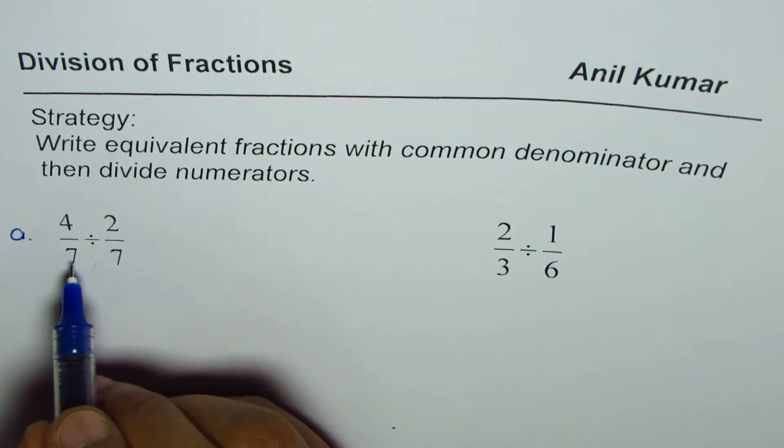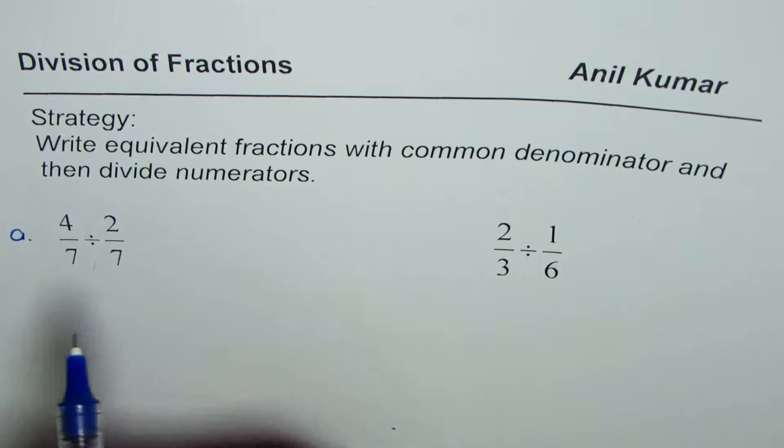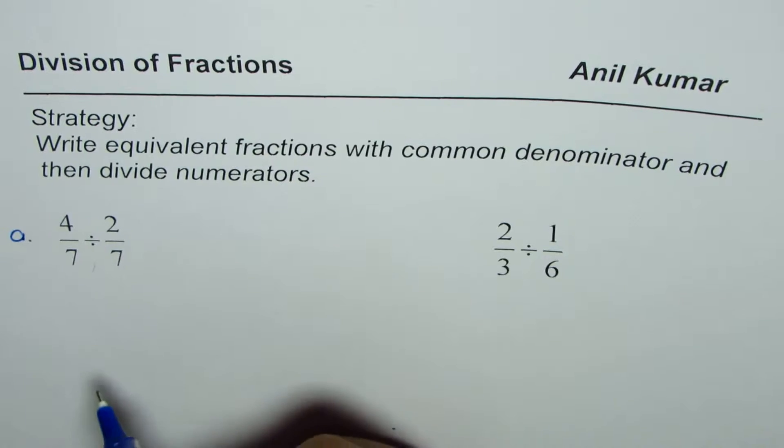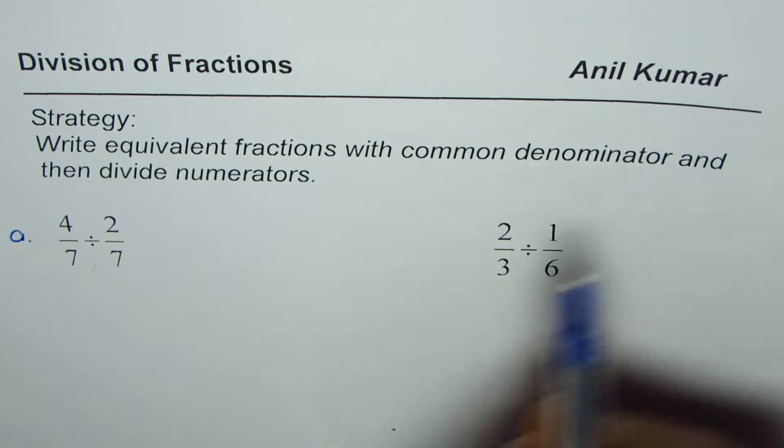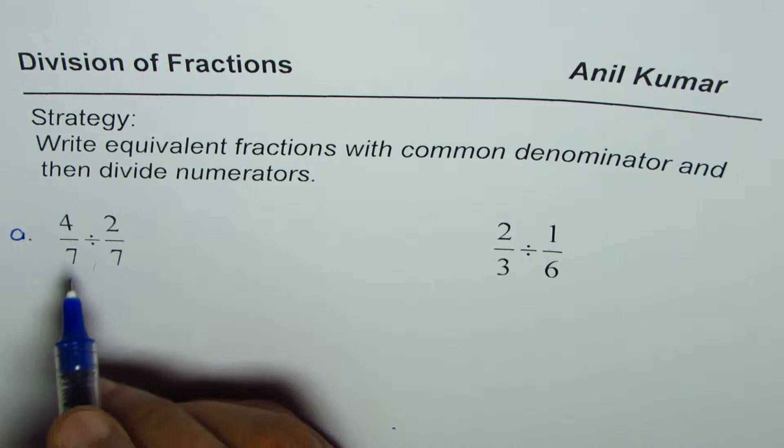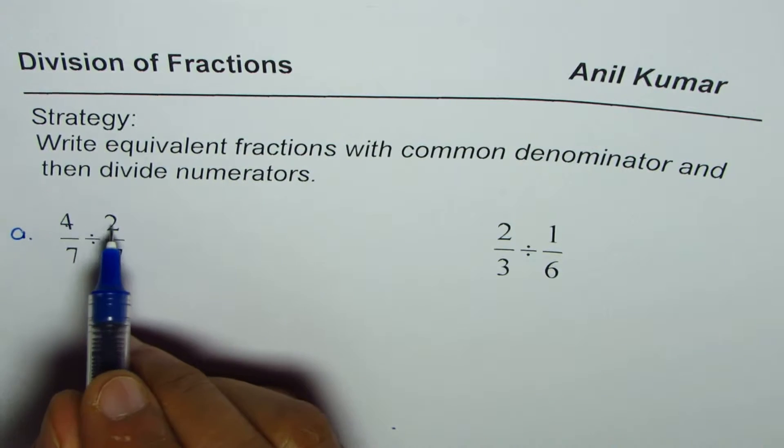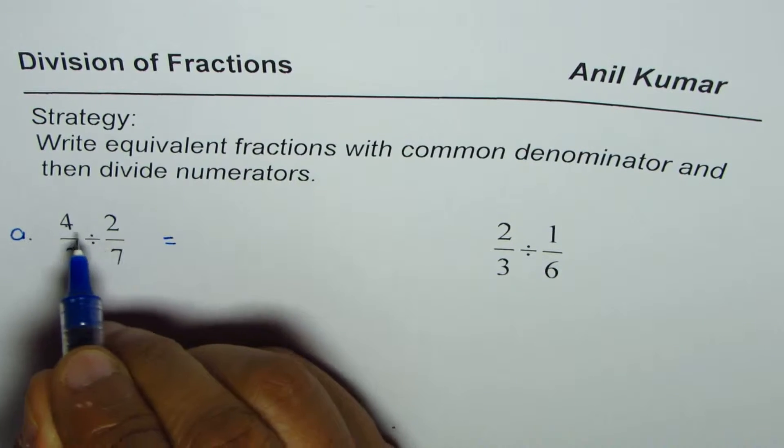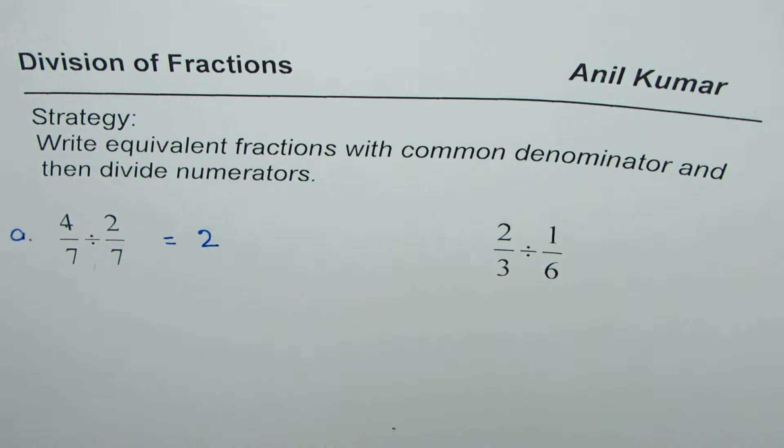Here we have common denominator of 7, so write equivalent fractions with common denominator - it's already there with us. Therefore we'll find the answer by dividing the numerators. So the answer for this will be 4 divided by 2, and that is 2.